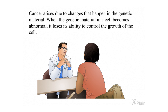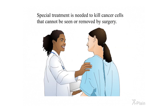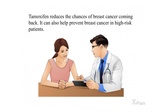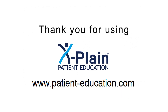Summary. Cancer arises due to changes that happen in the genetic material; when the genetic material in a cell becomes abnormal, it loses its ability to control the growth of the cell. Breast cancer can happen in women after puberty and becomes more common as women age. Special treatment is needed to kill cancer cells that cannot be seen or removed by surgery. Tamoxifen reduces the chances of breast cancer coming back and can also help prevent breast cancer in high-risk patients. Tamoxifen is safe but has some side effects and risks; knowing about them will help you detect and treat them early if they happen. Thank you for using Explain.